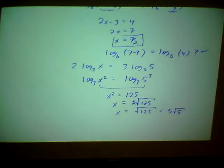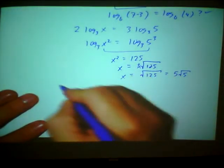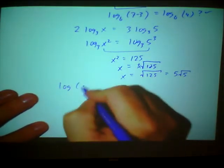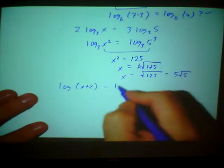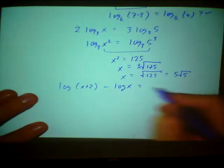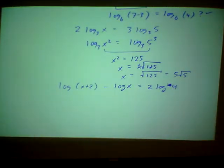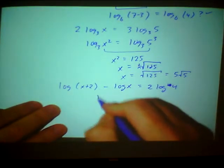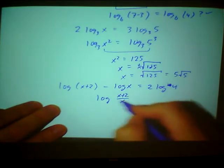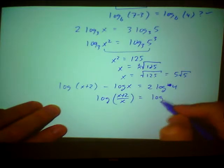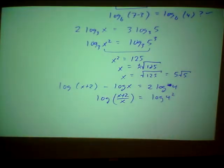Once again, once you sort of get the hang of it, hopefully not too difficult. Let's look at one or two more. How about log of x plus 2 minus log of x equals 2 log of 4. These are all base 10. Left-hand side, let's make those into one log. So log of x plus 2 over x. The right-hand side, let's get rid of the coefficient. Log of 4 squared. I didn't say it, but when I first started this problem, I noticed that all my terms are logs. So therefore, the goal was to get each side equal to one log. And now I can say, therefore, the argument x plus 2 over x must equal 16.